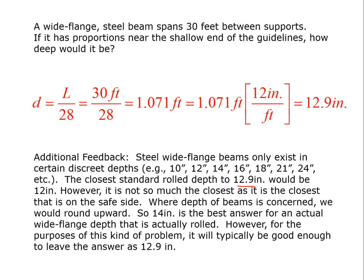However, 12 inches would put us below the shallow end of the guidelines, but also generally speaking, we tend to not lower the depth, but increase the depth anyway for safety reasons, but particularly when you're near the shallow end, you would not round down to 12 inches, but you would round up. So if we're going to do that, we're going to pick a 14 inch deep beam. For the purposes of this kind of problem though, we may typically just leave the answer in this form, but you should be aware of this modular dimensions of steel wide flange beams.